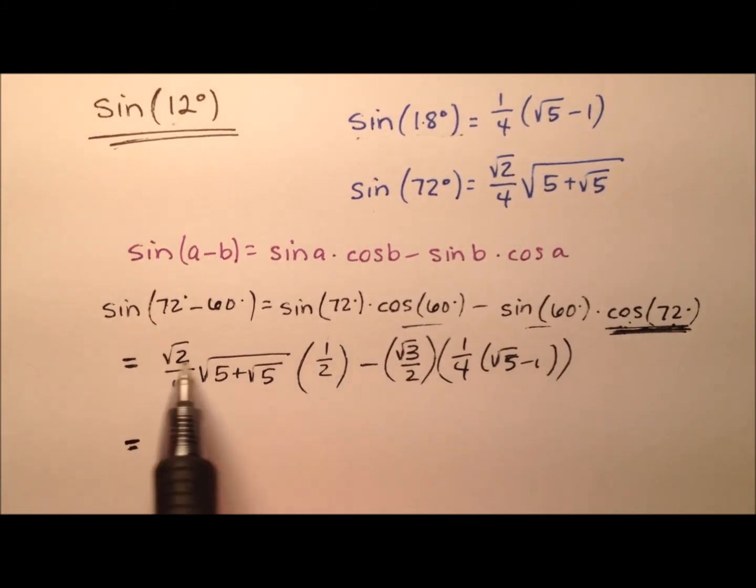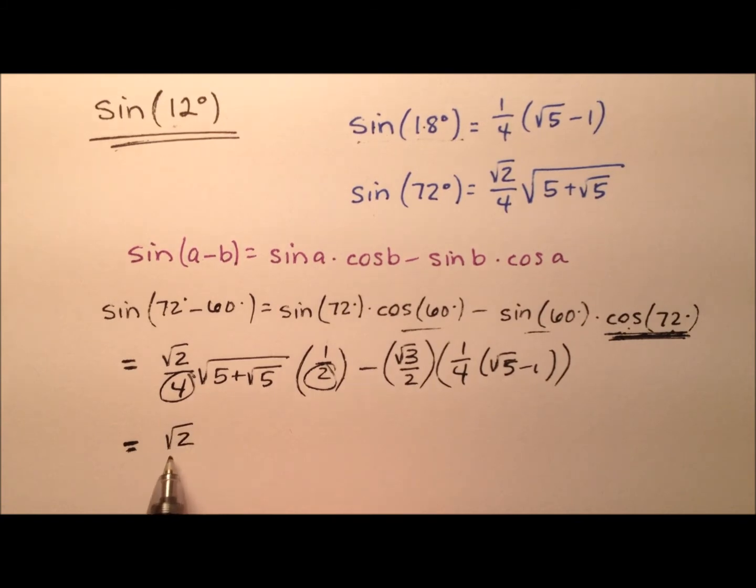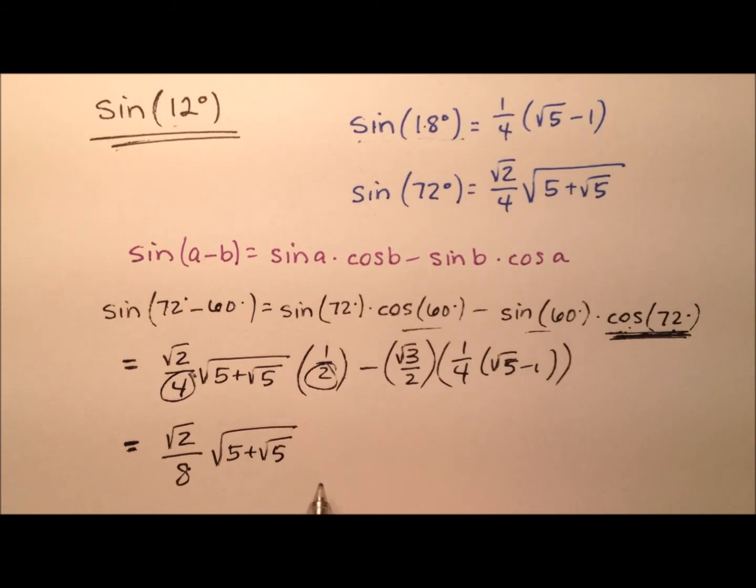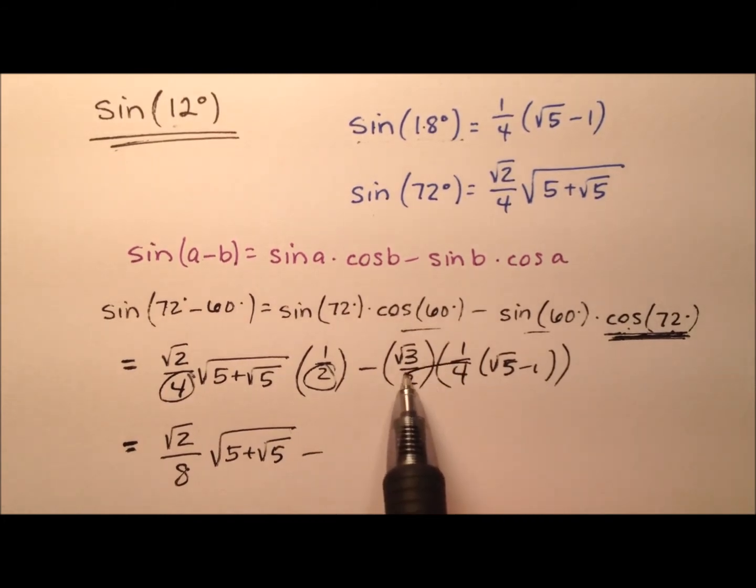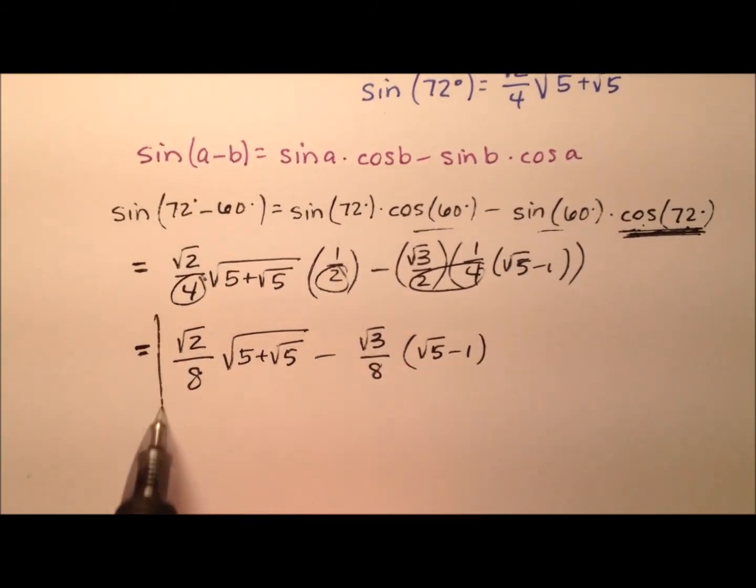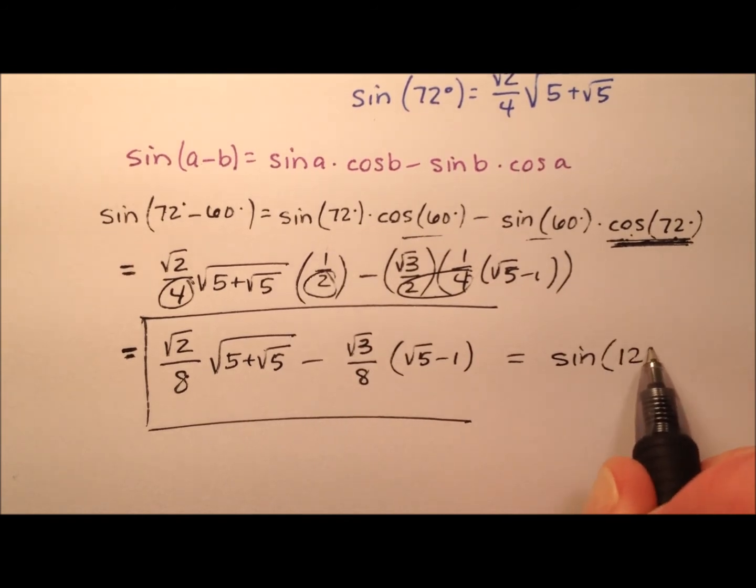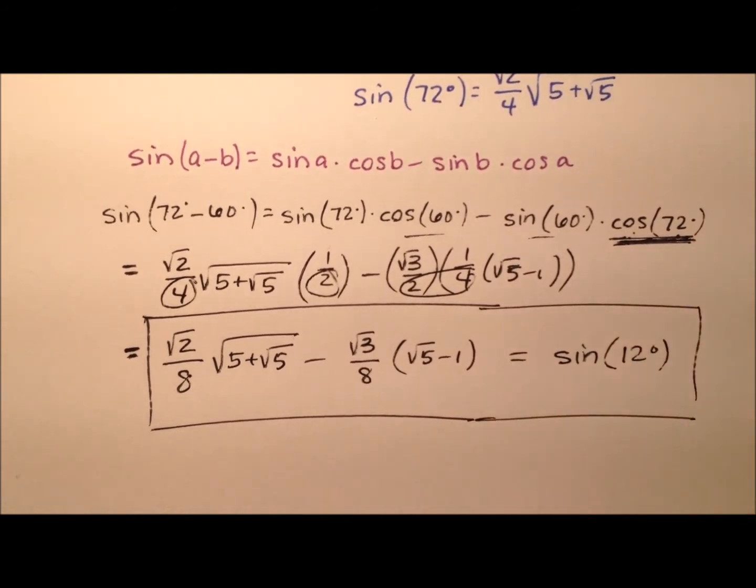Now it's just a matter of simplifying this, and we'll put it in a calculator and we'll see if it works. So the denominators here, 4 and 2, let's multiply together. I have the square root of 2 over 8, and that's multiplied by this square root expression, minus the square root of 3 over 8, and then multiplied by the square root of 5 minus 1. And so this expression is going to be the exact value for the sine of 12 degrees.